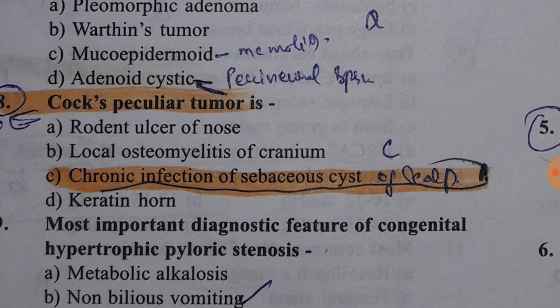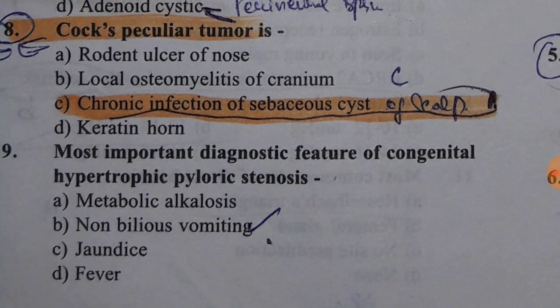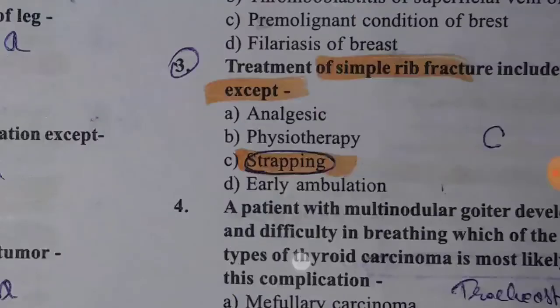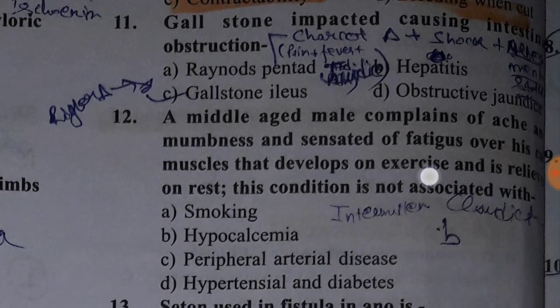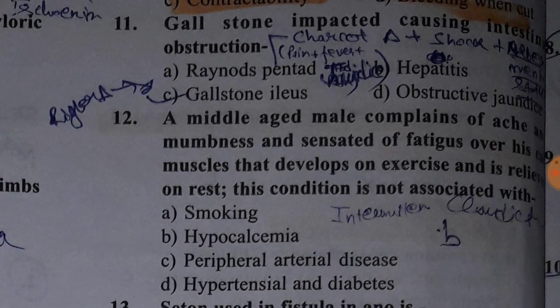Most important diagnostic feature of congenital hypertrophic pyloric stenosis is non-bilious vomiting. There are also certain USG criteria — do see them and revise them. Now, gallstone impacted causing intestinal obstruction — basically this is the condition of gallstone ileus, having Rigler's triad.